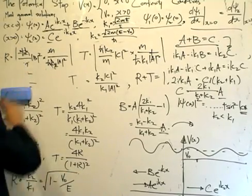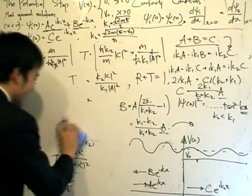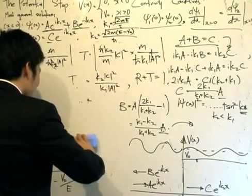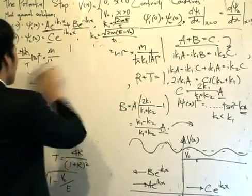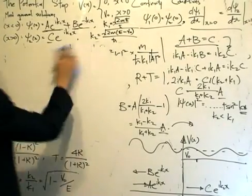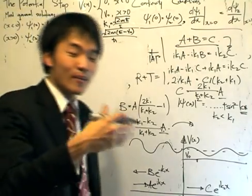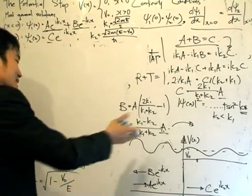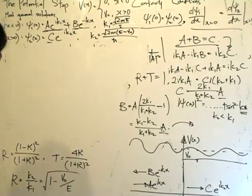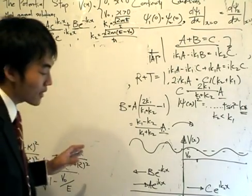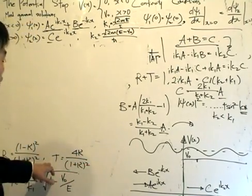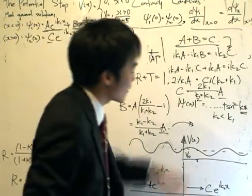So now we are in business. We can finally see what's this funny behavior. Remember, these reflection and transmission coefficients represent the ratio of the particles that get reflected to the particles that is incident. So we want to see really what we get from here. Again, classical mechanics tells us that this transmission coefficient is really equals to 1. All the particles get transmitted over.